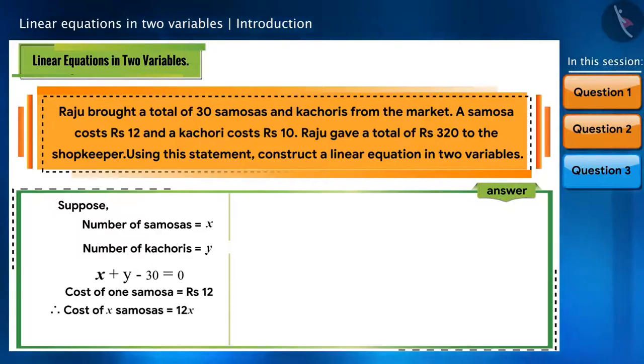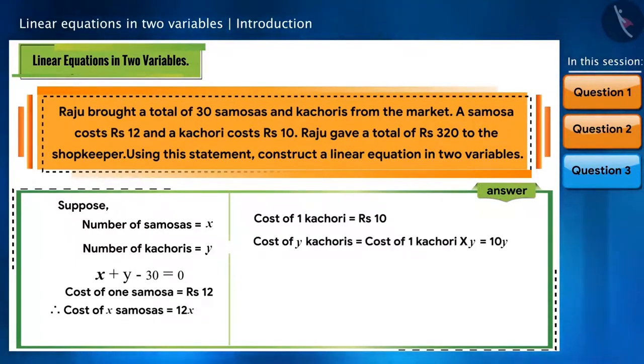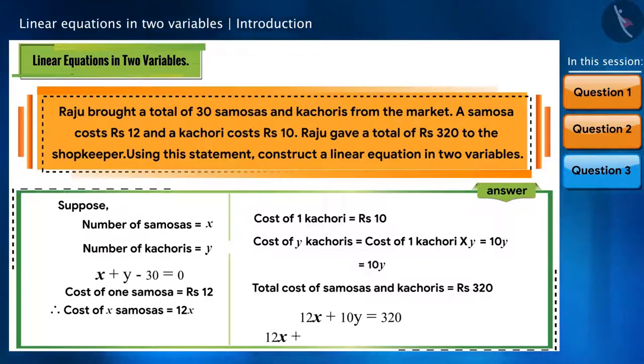Similarly, the cost of y kachoris will be 10y. Total cost of samosas and kachoris is rupees 320. So, we will write this as 12x plus 10y is equal to 320, or 12x plus 10y minus 320 is equal to 0.